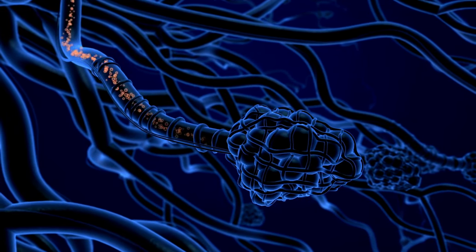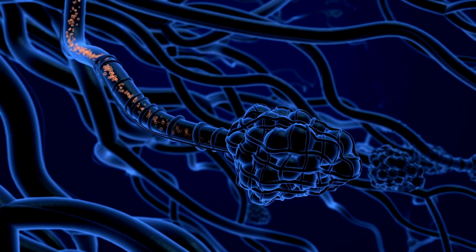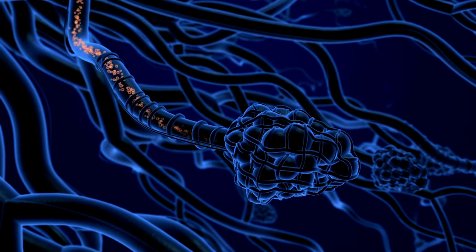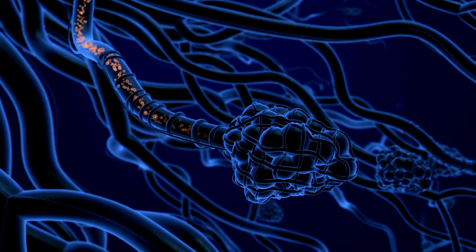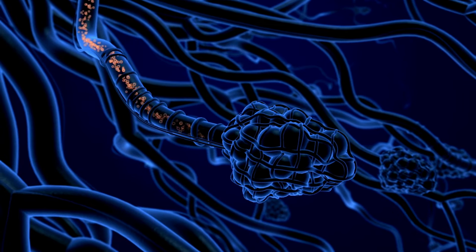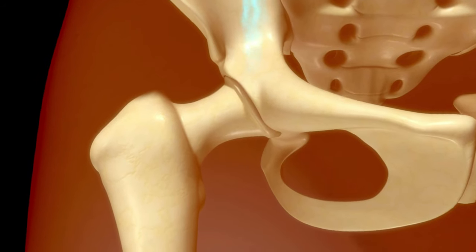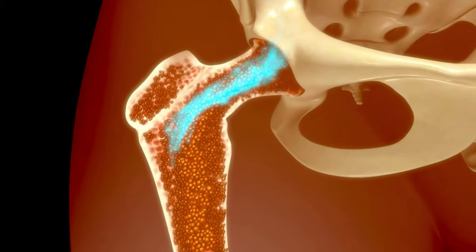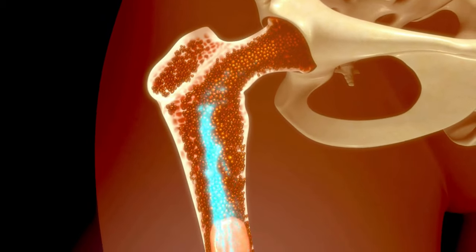The lymphatic system influences various body parts, from our digestive system to organs like the spleen and thymus, and even our bone marrow. A malfunction in this system can lead to severe diseases, including certain cancers.